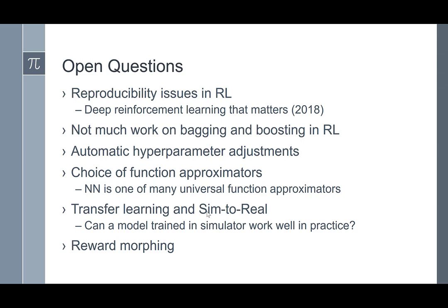I haven't found much work on bagging and boosting in reinforcement learning, so that's something worth looking into. Automatic hyperparameter adjustment is another open area — what should the learning rate be to optimally learn the Q-function, value function, or policy function? These are things that haven't been particularly addressed.